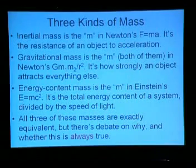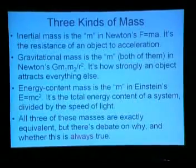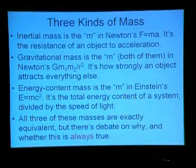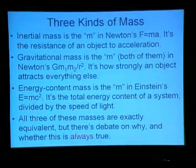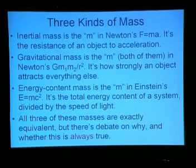Gravitational mass, also due to Newton about 20 years later, is both of the m's that appear in Newton's gravity formula — it's how strongly an object attracts everything else. Energy content mass is the m in Einstein's E equals mC squared: it's the total energy content of a system divided by the speed of light squared.